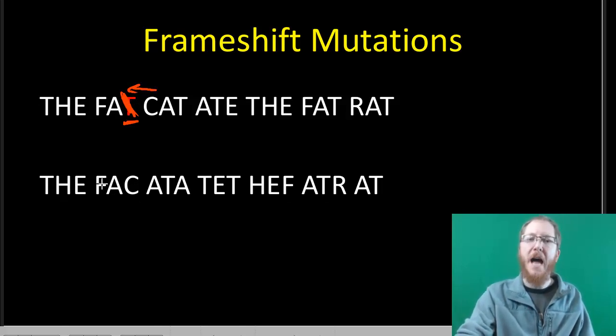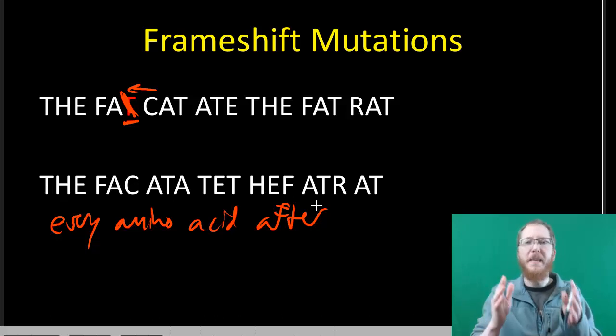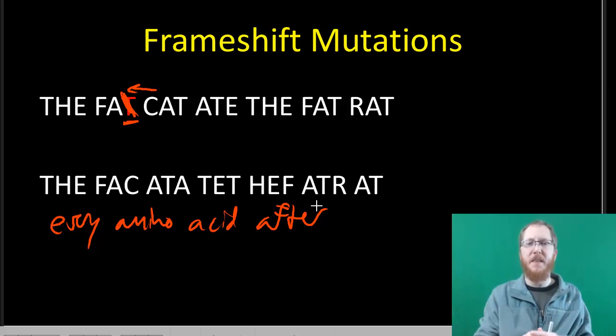The C of cat now becomes the third guy in what used to be fat. So the fat cat, we now have the fac ata tet hef atr at. Everybody after there, once again, every amino acid after this mutation is affected. If this occurs in the middle or the beginning of a gene, it's going to be disastrous because pretty much every amino acid in that protein is going to be altered in some way, which means the chances of that protein even a little bit functioning like it used to is pretty much null. That protein is pretty much ruined.